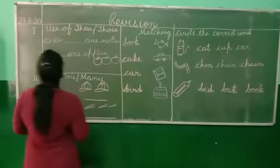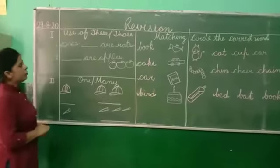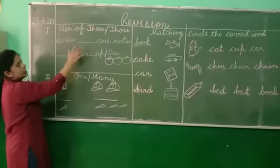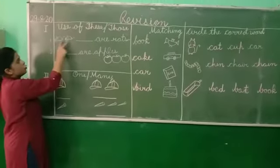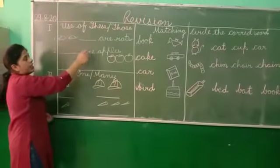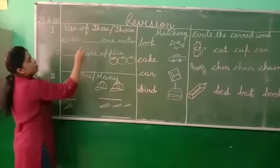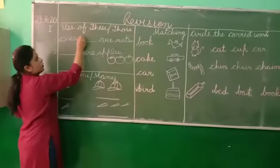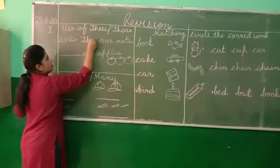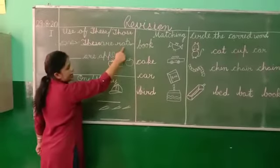Ok children, first topic is use of these and those. Do you know how to do this activity? These and those. Here are two pictures. Rats. If you know how to do pictures, what is used? These. So these are rats.